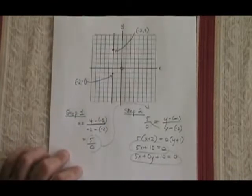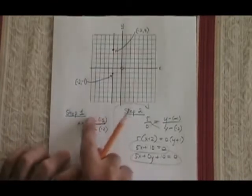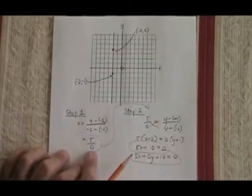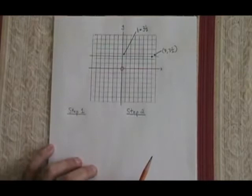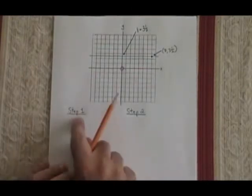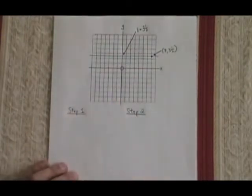So when you have a vertical line, you can still use the same step 1 and step 2 process, even though your slope is undefined. What about when I have a horizontal line? I can still use my step 1 and step 2 process, so I'm going to demonstrate it.